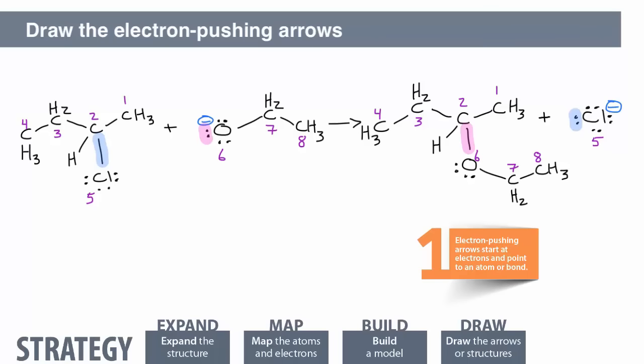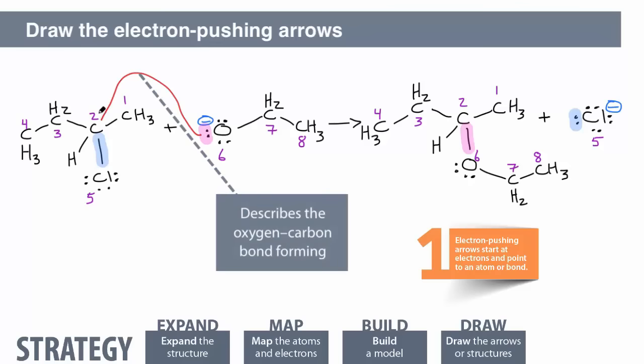Start the electron-pushing arrow on one of the non-bonding electron pairs on oxygen. It doesn't matter which pair. Point the arrow to the carbon.